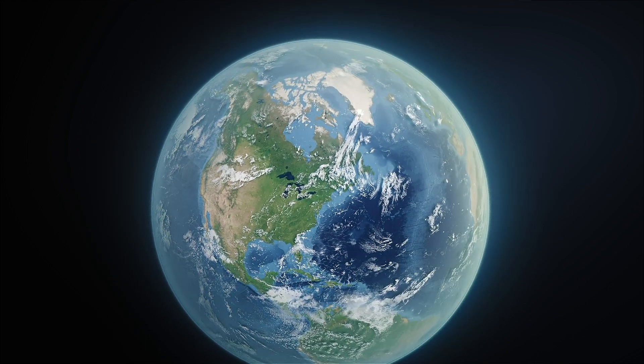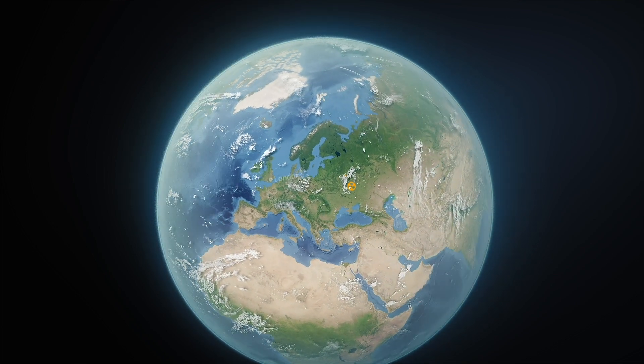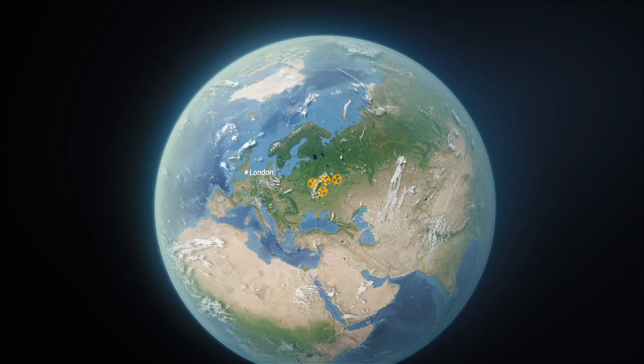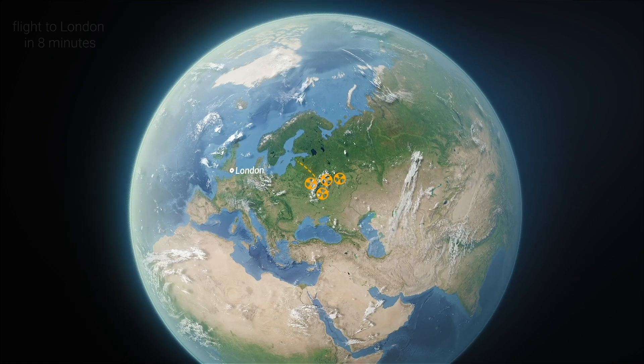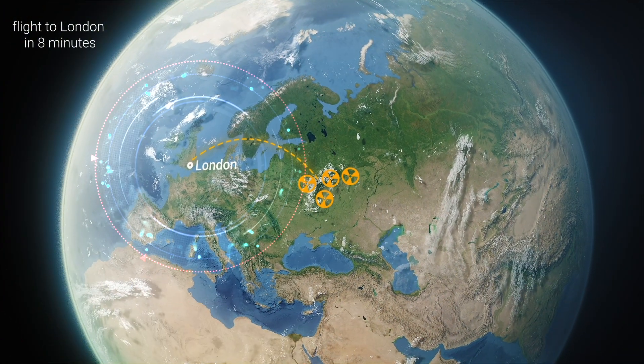Some of the missiles are based at a missile range in the Kaluga region. These are the so-called nuclear glades. According to the tests conducted, the time of approach of the missile to London will be about 8 minutes, to New York about 20 minutes.